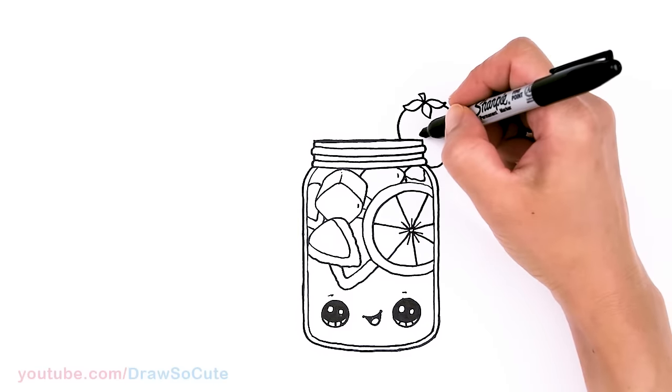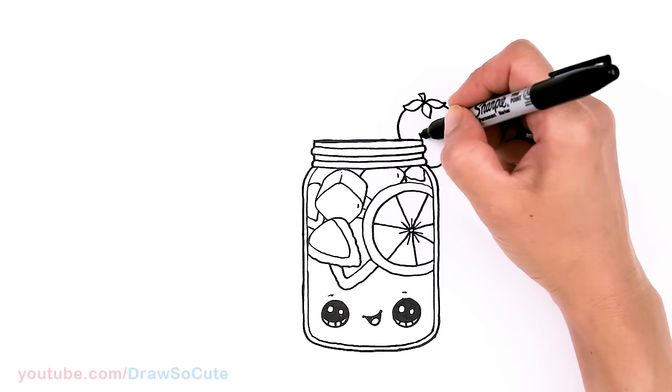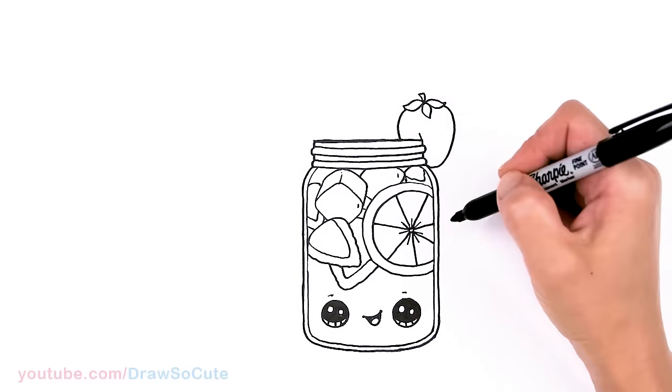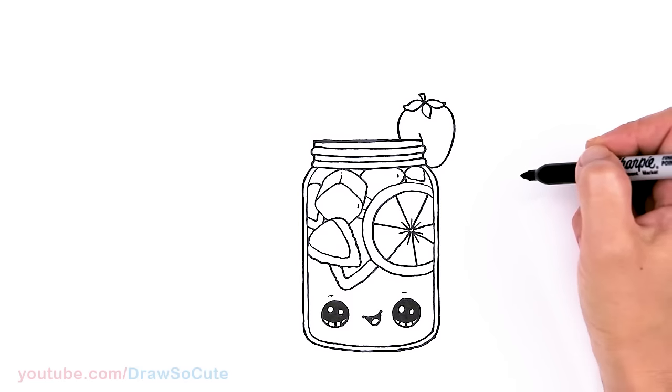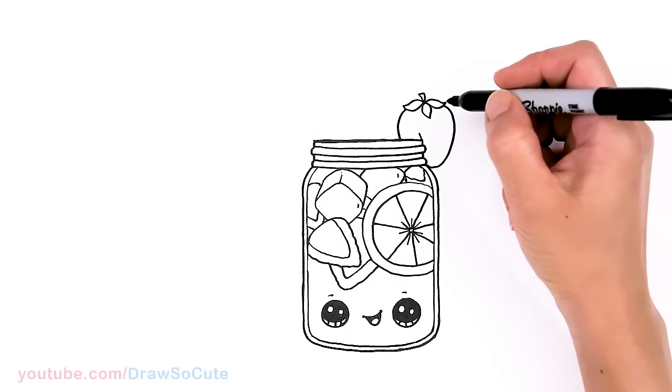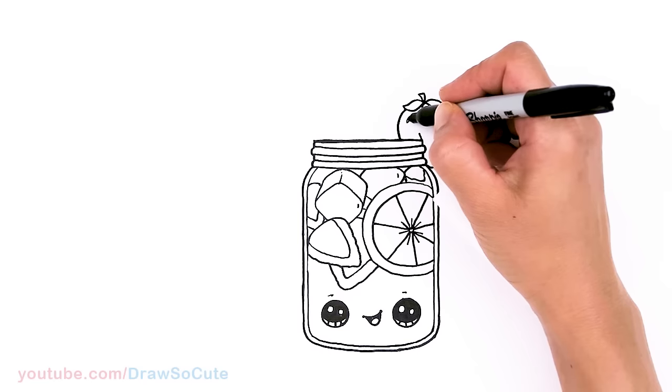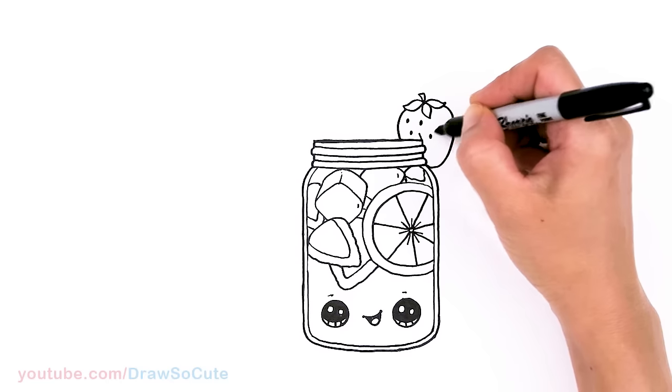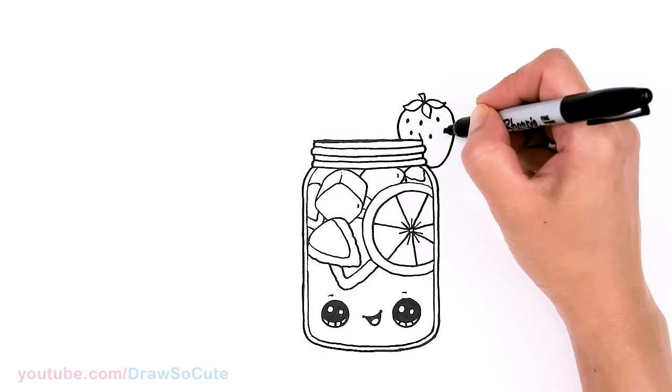And if you want to make it look more believable right here, you can kind of add a little line where the strawberry is cut so that it fits right into the jar. And then also, of course, you can add some seeds here and there to make it look like a strawberry.